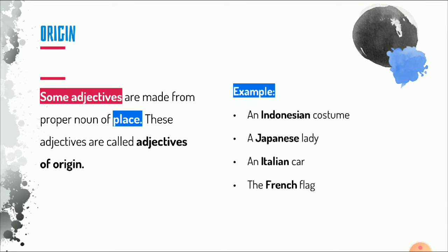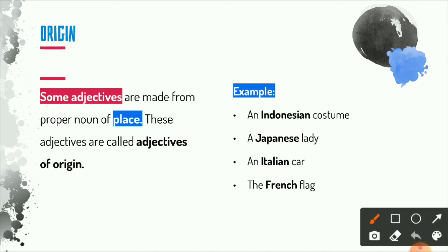Then we have adjectives of origin. Some adjectives are made from proper nouns of place, and these are called adjectives of origin. For example: 'an Indonesian costume,' 'a Japanese lady,' 'an Italian car,' and 'a French flag.' The adjective describes where the thing comes from — for instance, 'Indonesian' tells us the costume is from Indonesia.